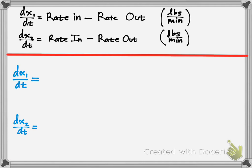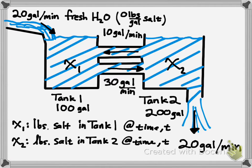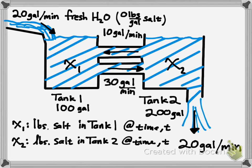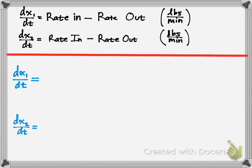We have pounds of salt, so you're going to have pounds per minute as your rates. We're going to figure out what's coming in and what's coming out. So what's coming into tank one? 20 gallons per minute. What's also coming into tank one? 10 gallons per minute. But what's leaving is 30 gallons per minute.